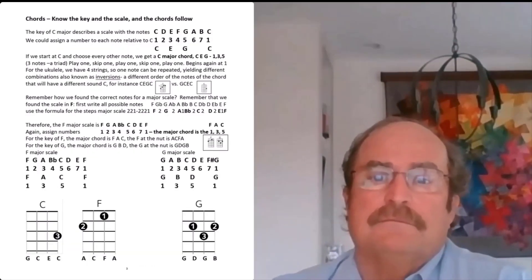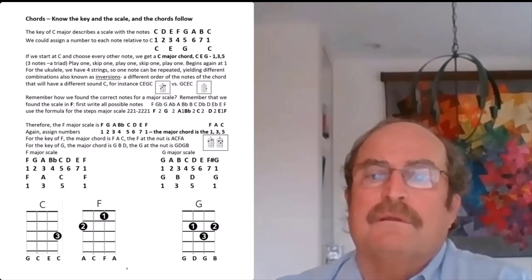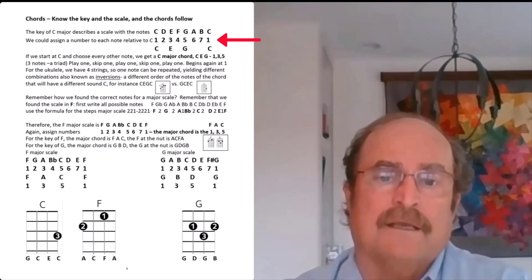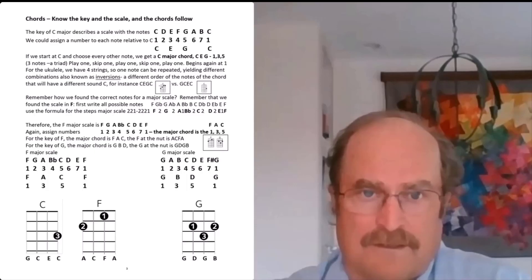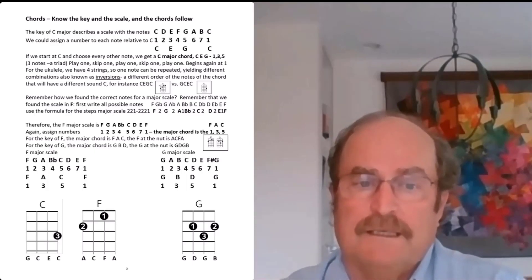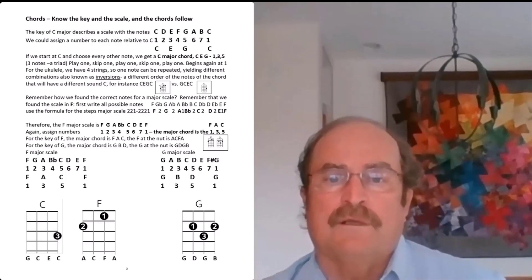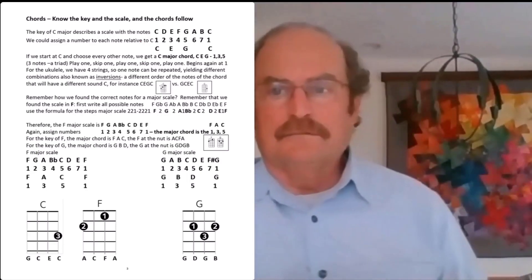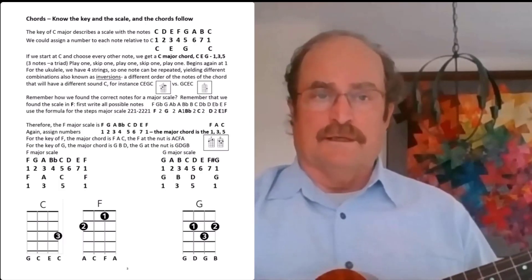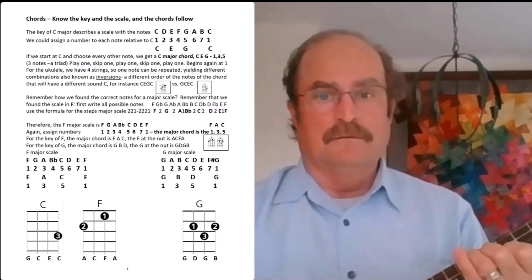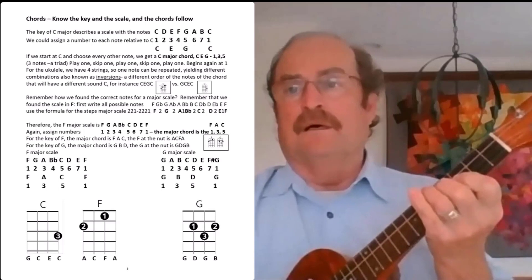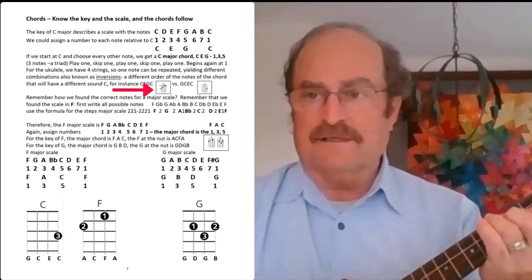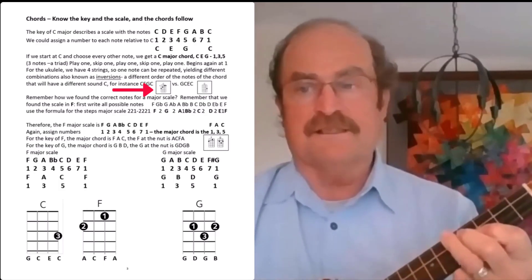Once you have the C scale — C D E F G A B C — we've numbered the notes. The numbers are important because you can refer to the number of a note in any scale. To play a plain C chord, we need the one, three, and five: in C major that's C, E, and G. The ukulele has four strings and we only need three notes, so we have options. C-E-G could be played using what I'd call an A-shape — or what you might know as a B-flat shape — using all four strings.